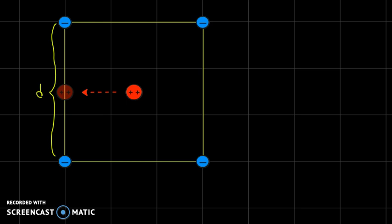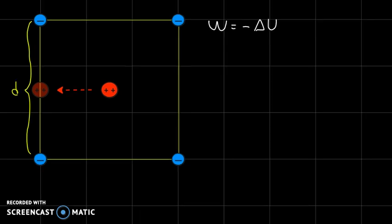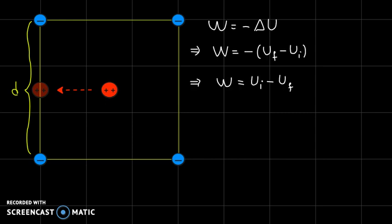Work done on this alpha particle by the electric field created by the electrons around it is equal to the negative of the change in the alpha particle's potential energy as it moves along this path. So work equals negative delta U, and since delta U means final minus initial, rearranging gives us work equals initial potential energy minus final potential energy. Let's go ahead and calculate the initial potential energy first.